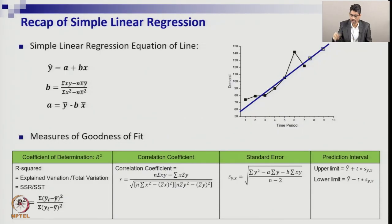In the previous session, we discussed the steps of simple linear regression and how to estimate the coefficients using least squares. We also discussed different measures of goodness of fit like R-square, standard error, prediction interval, etc. Let us see what we have done in simple linear regression. Today, what we are going to discuss is called multiple regression, which is just an extension of simple linear regression, but the fundamental concepts will remain the same.